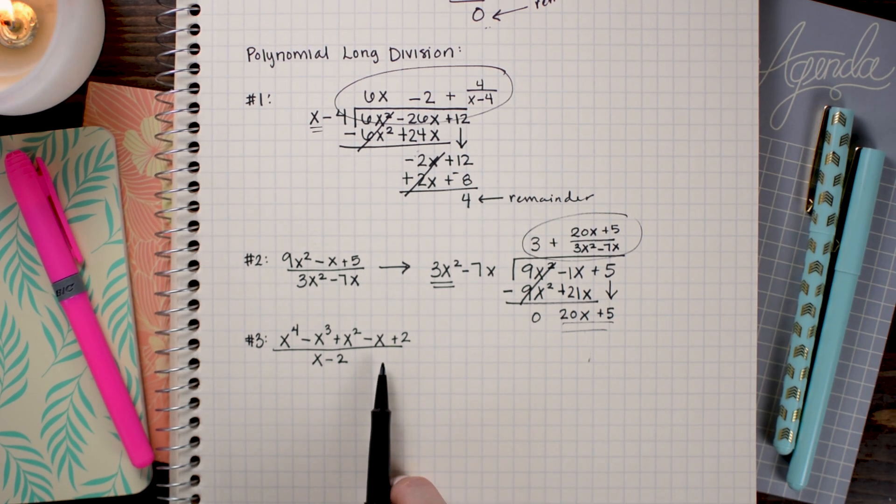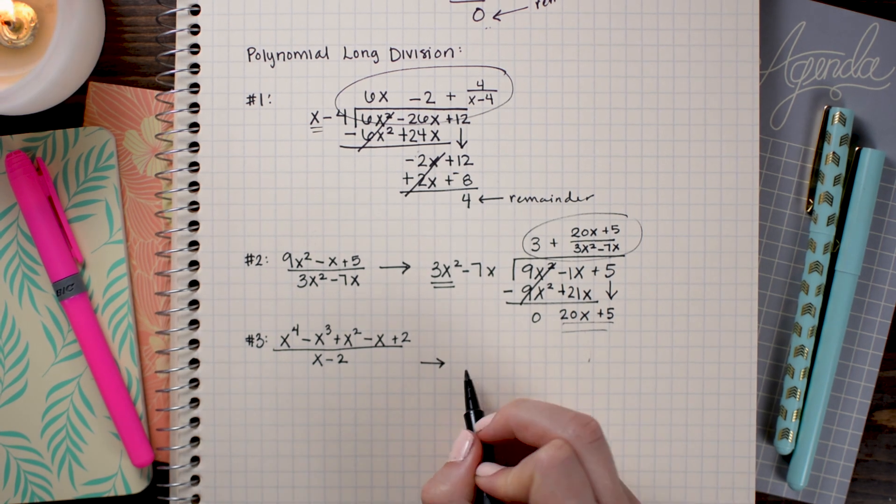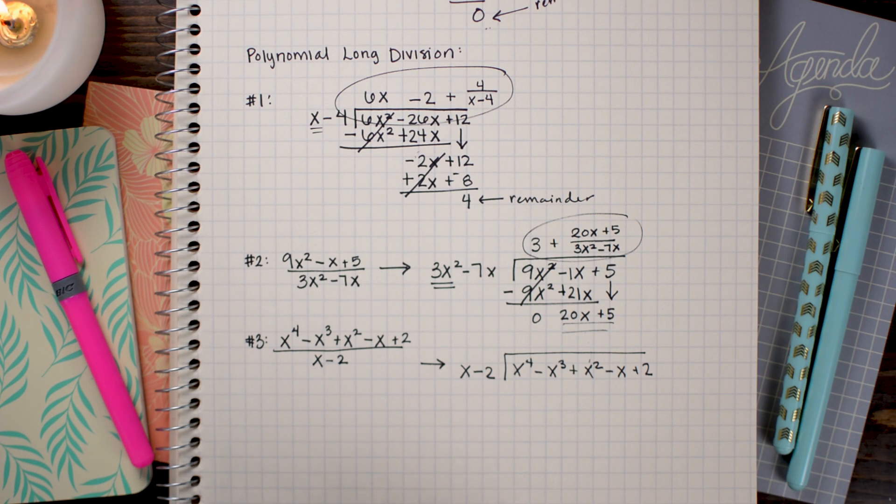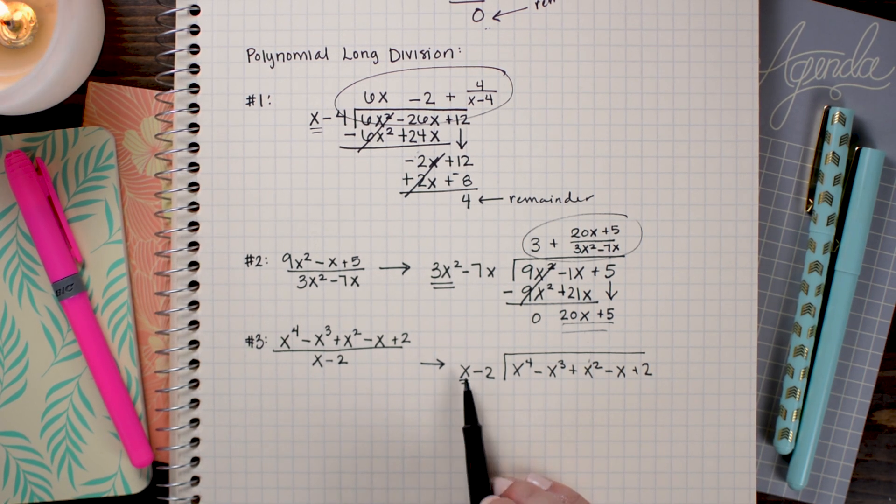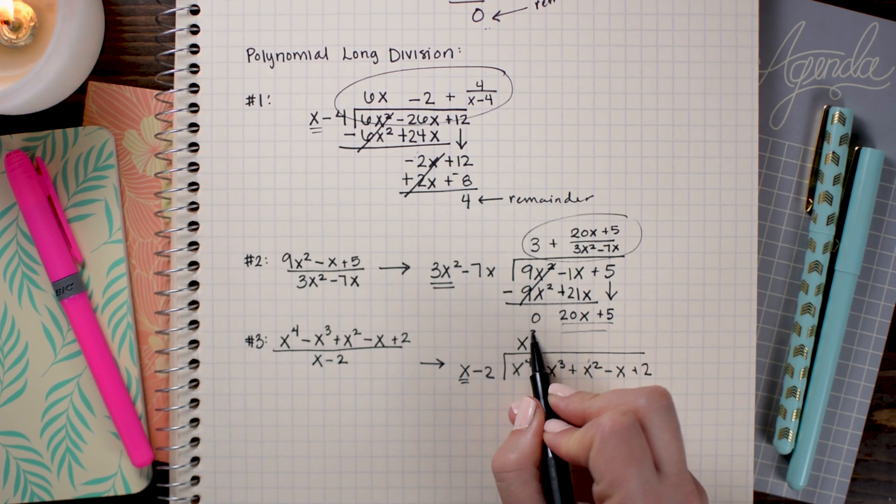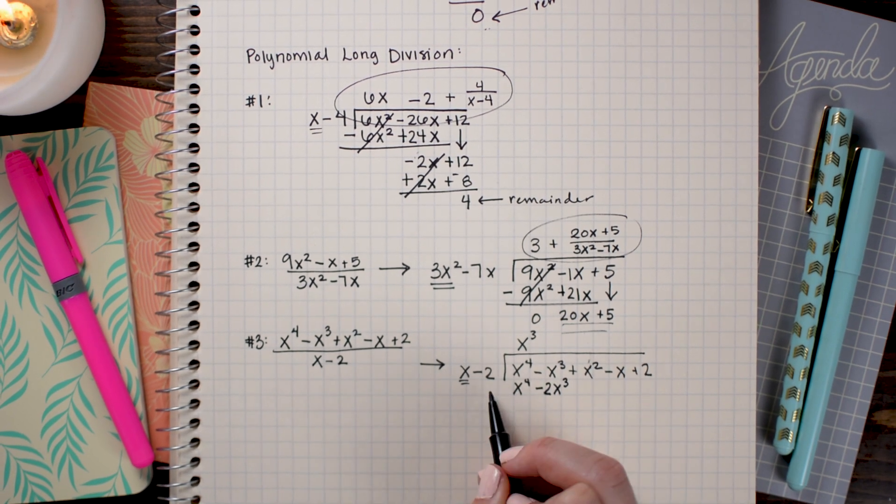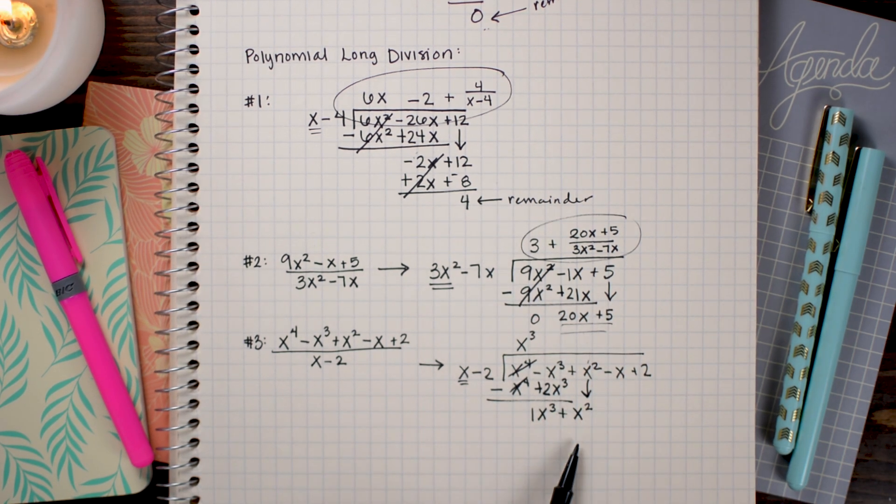So I'm going to begin by writing out my long division and the x - 2 is what I am dividing by. So it's going to go on the outside. I begin by looking at the first term on my divisor and seeing what I could multiply with it to get x⁴. So since x times x³ is x⁴, I'm going to place an x³ up here and then I'm going to multiply it to both and subtract.